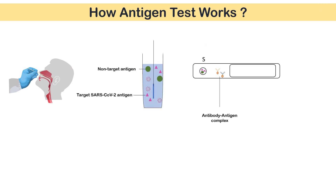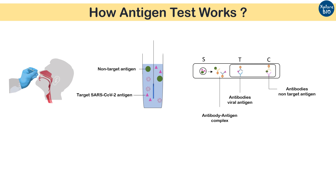The sample moves laterally by capillary action towards the conjugation pad and binds to its specific antibodies. At point T, another set of antibodies against the viral antigen is fixed. At point C, antibodies against the non-target antigens are fixed. At these points, if the antigens corresponding to the antibodies are present, they form a sandwich with antigens in between and appear as colored lines.